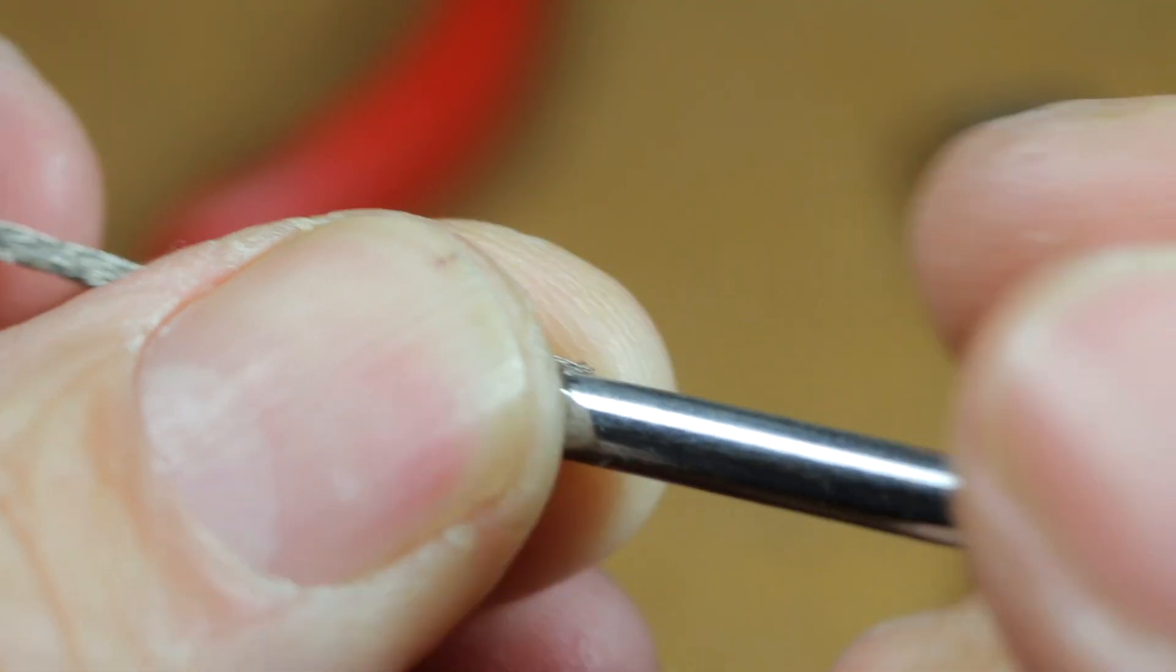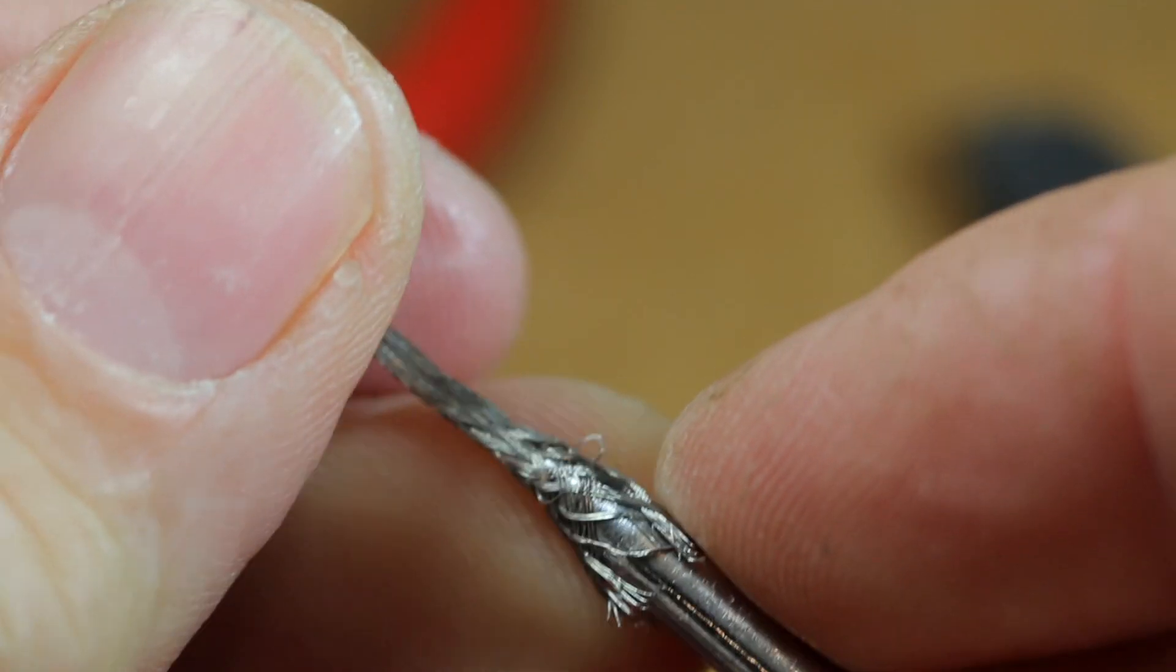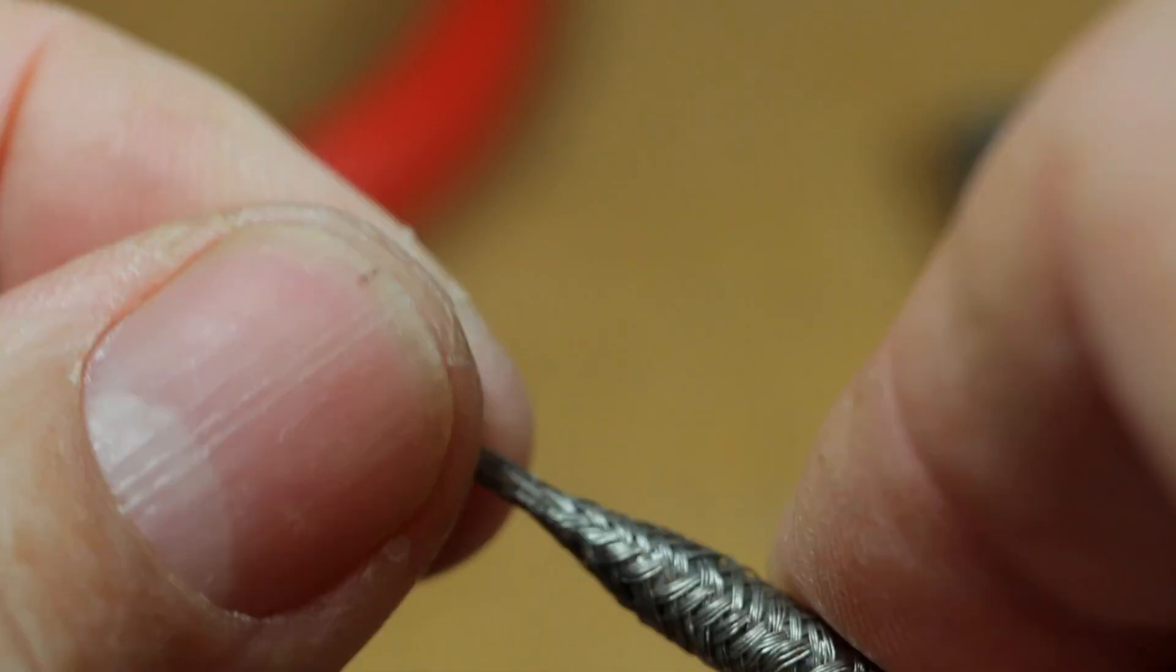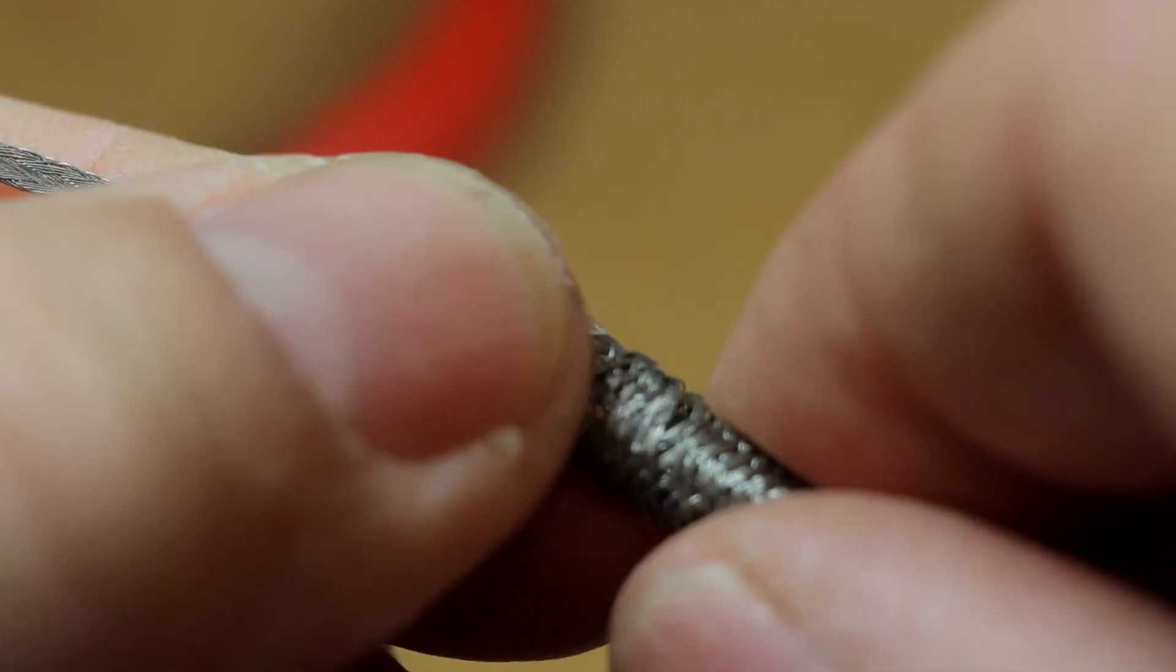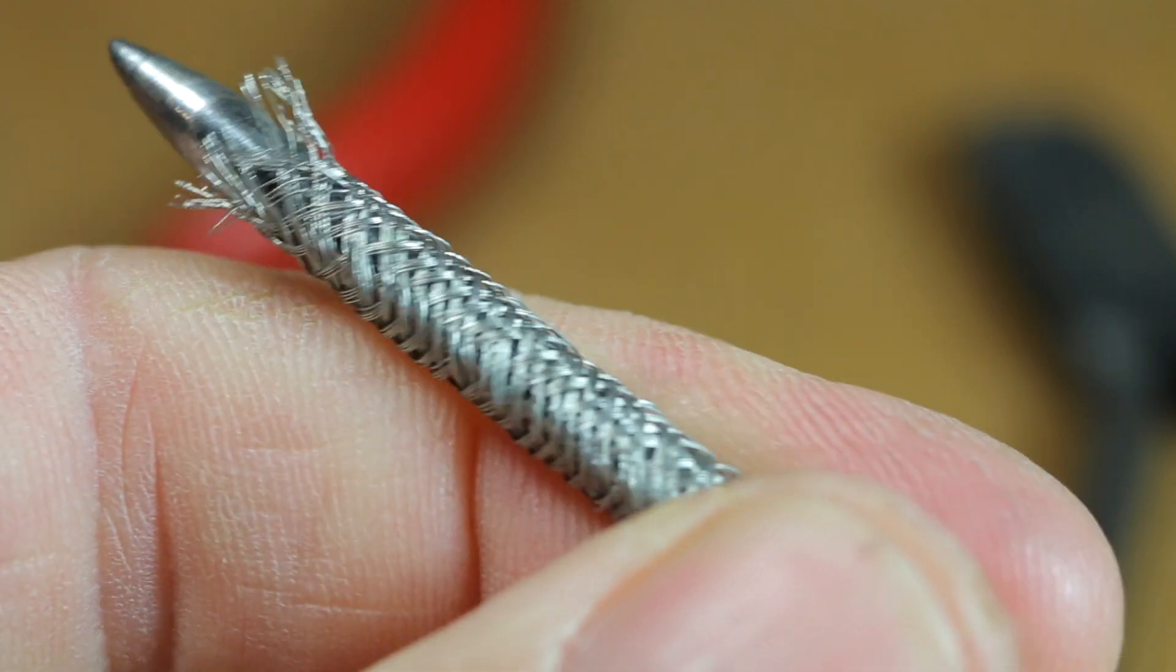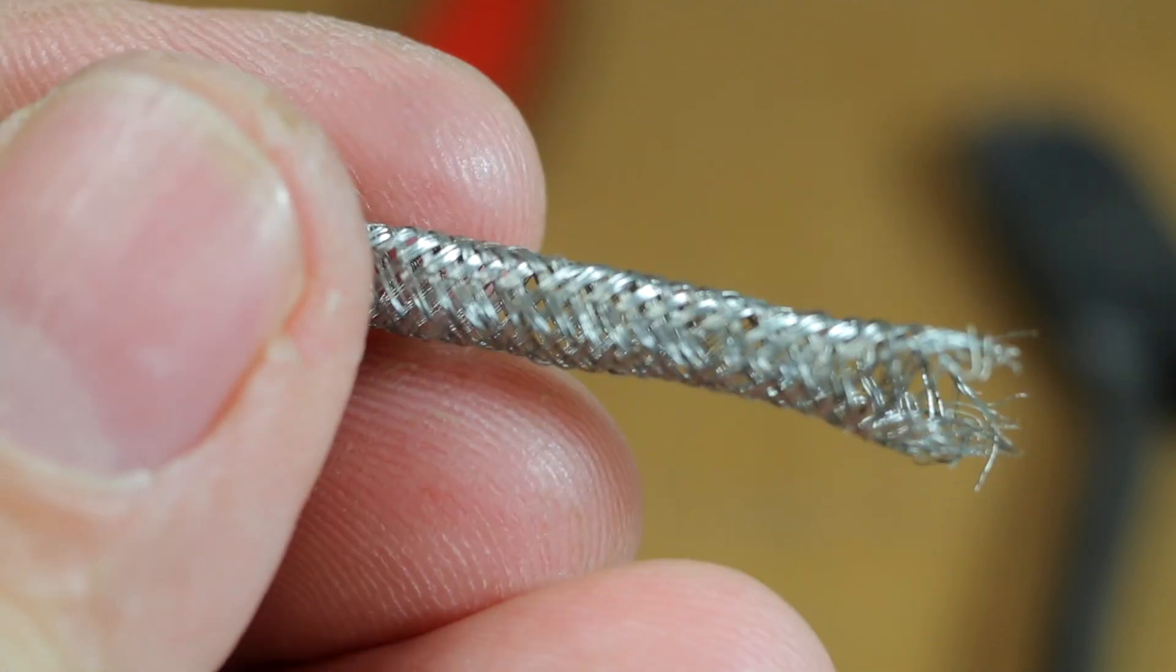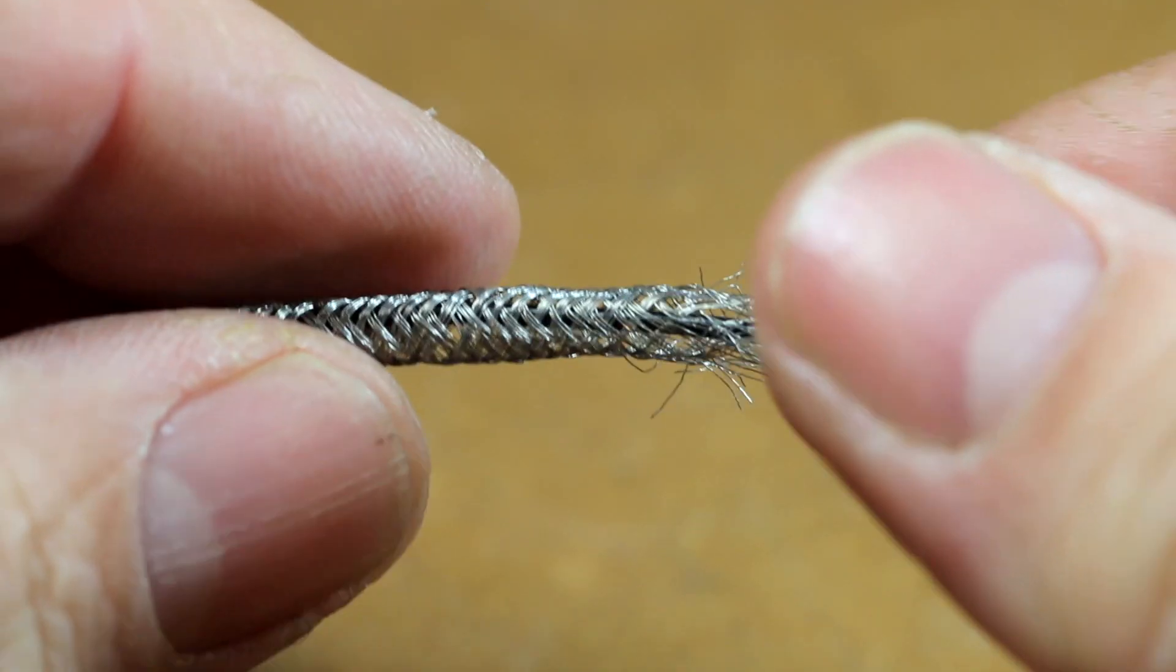I cut off some braid that's longer than the hookup wire and now it's shish kebab time. I carefully feed through the skewer to expand the braid. In goes the hookup wire and then I smooth it all out.